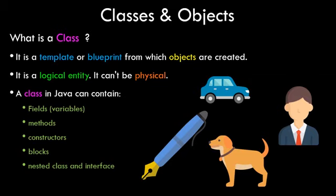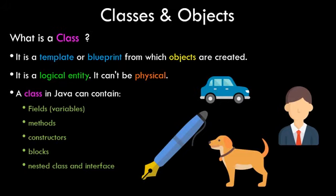A class can represent a car, a person, a dog, an animal — anything. We need classes because a class is a template with combinations of different fields, and if you want to make your own custom data type you can use a class. In general we have basic variables like int and float — similarly, a class can act as our own custom inbuilt data type. You'll understand this more clearly as we move ahead in this tutorial.